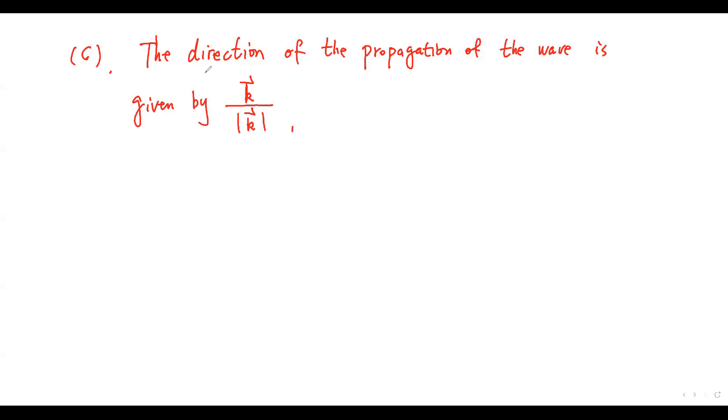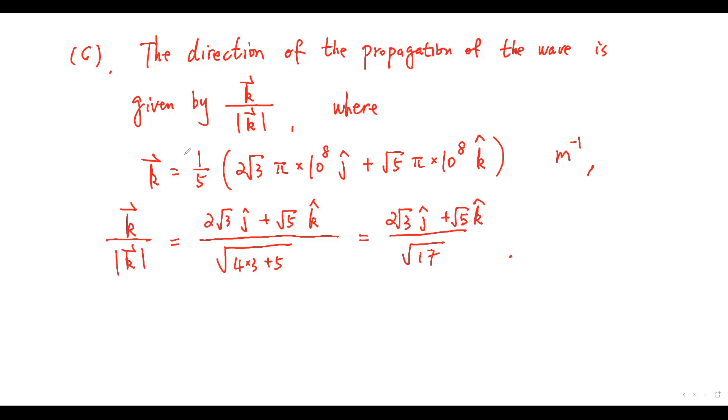The direction of the propagation of the wave is given by K. Well, K is given by this vector. So, the direction is given by this unit vector.